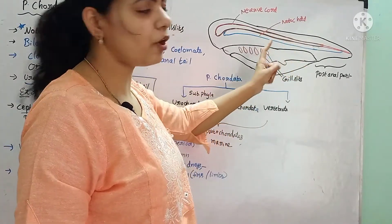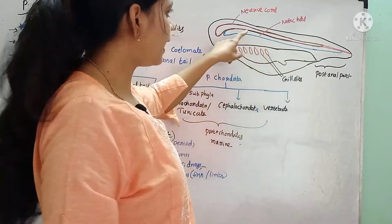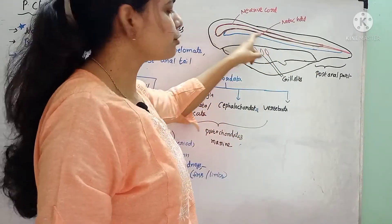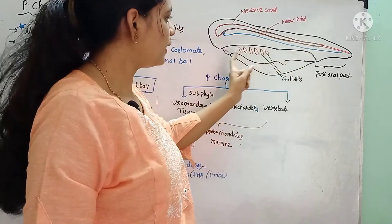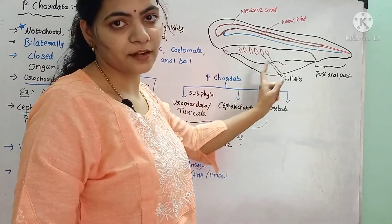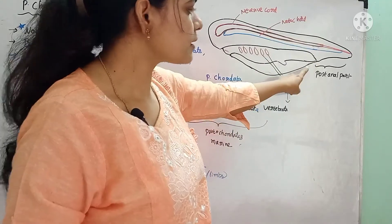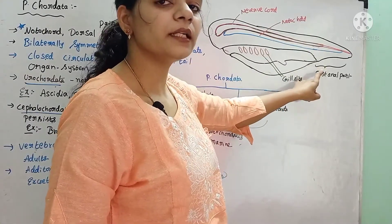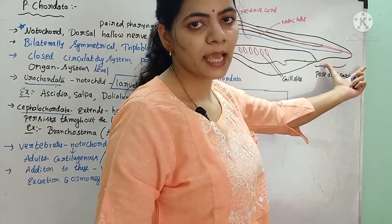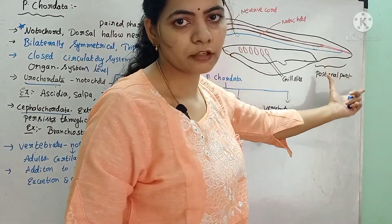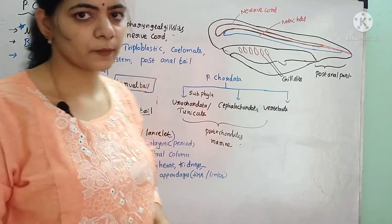What are the characters of the chordates? They have a notochord. In addition to this, a dorsal hollow nerve chord is also present. Paired gill slits are present for respiration. In the anal region, this part is called as post-anal tail. The post-anal tail is also a characteristic feature of the chordates.